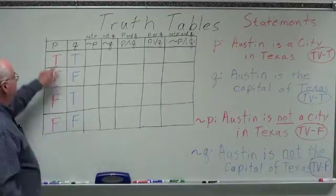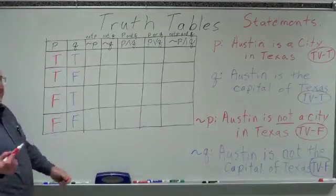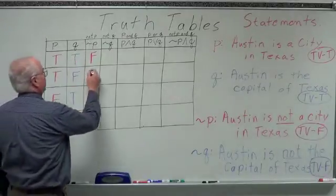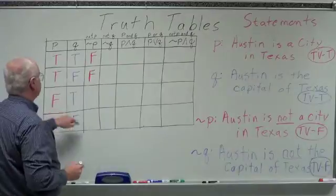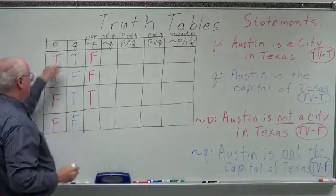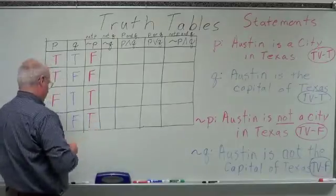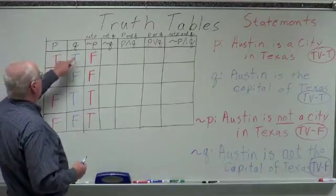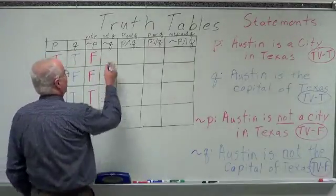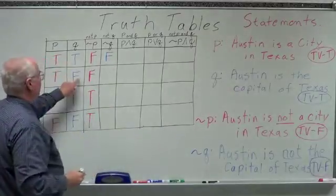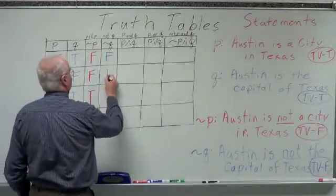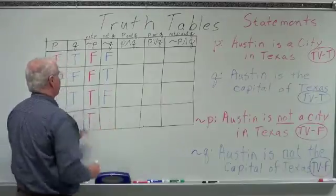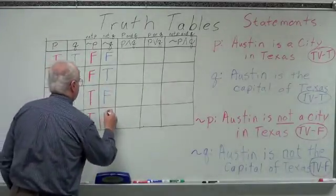If P is true, not P is going to be false. If P is false, not P is going to be true, and again it's going to be true. If Q is true, not Q is going to be false. If Q is false, not Q is going to be true. If Q is true, not Q is false. If Q is false, not Q is true.